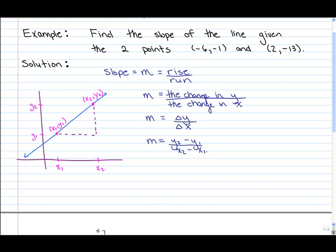Now given our point here, our first point is when x is equal to negative 6, y equals negative 1, and our second point here is when x is equal to 2, y is equal to negative 13. Another way of writing this would be calling this point x1, y1, and calling this one x2, y2.